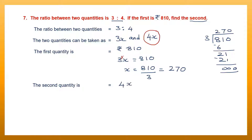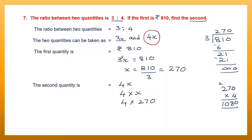I can find the second quantity. The second quantity we have taken as 4x, which is 4 into x. So 4 into 270 — let's multiply. 4 zeros are 0, 4 sevens are 28 carry 2, 4 twos are 8 plus 2 is 10. So I have found my second quantity to be rupees 1080. Our answer is rupees 1080, which is the second quantity.